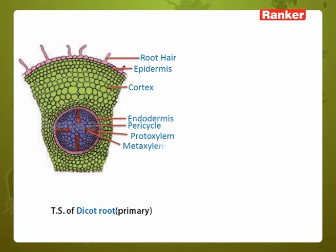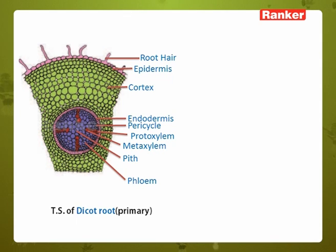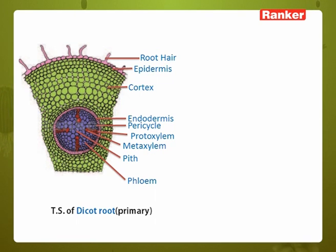We can see in the diagram there are four bands of xylem surrounded by phloem elements. The exact condition here is that metaxylem is towards the center and protoxylem is towards the periphery. The arrangement of the vascular bundle is radial and alternate. At the center of the root you will see the presence of pith, which is parenchymatous tissue. This is about the T.S. of dicot root.